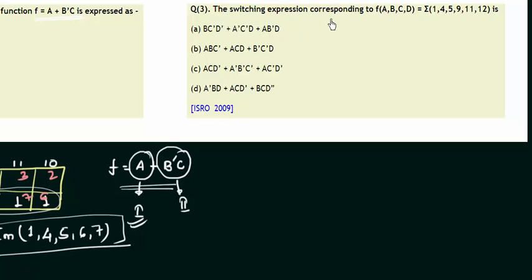Now let's move to question number three which was taken from the paper ISRO, Indian Space Research Organization, in the year 2009. The question is the switching expression corresponding to F, A, B, C, D. These are the variables. Is equal to summation m. There should be m, I don't know why it's not written. One, four, five, nine, eleven and twelve is.